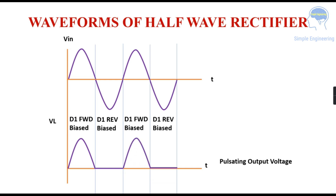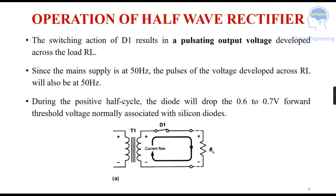So you get a pulsating output voltage across the load resistance. In the positive half-cycle, diode D1 is forward biased and current flows; in the negative half-cycle, D1 is reverse biased and there is no current flow. The switching action of D1 results in a pulsating output voltage across RL. Since the mains supply is at 50 Hz, the pulses across RL will also be at 50 Hz.